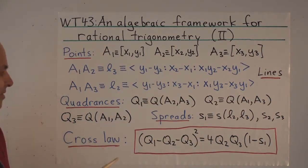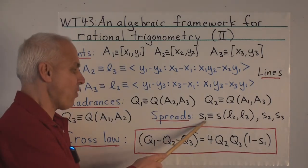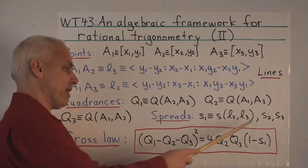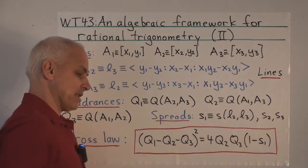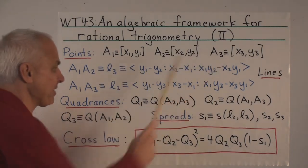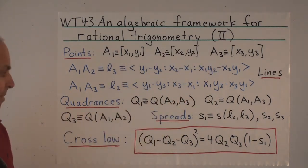And similarly, we'll denote the three spreads. S1 is the spread between L2 and L3, and so on. S2 is the spread between L1 and L3. And S3 is the spread between L1 and L2. So we have these three quadrances formed by these three points, and the three spreads formed by these three points.